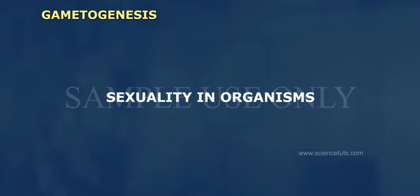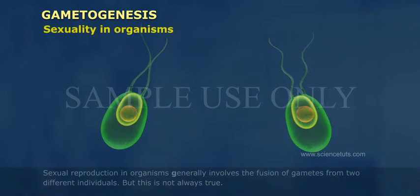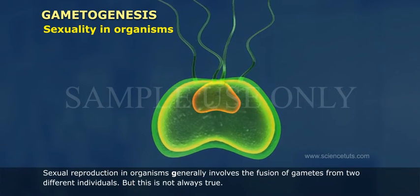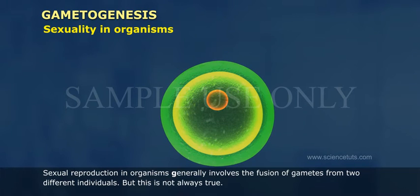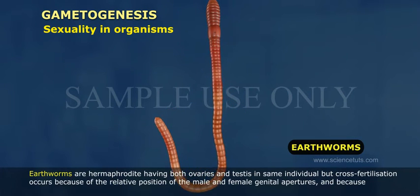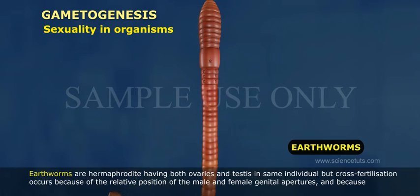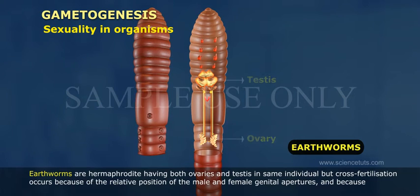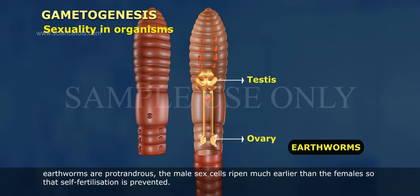Sexuality in organisms. Sexual reproduction in organisms generally involves the fusion of gametes from two different individuals. But this is not always true. Earthworms are hermaphrodites, having both ovaries and testes in the same individual. But cross-fertilization occurs because of the relative position of the male and female genital apertures, and because earthworms are protandrous, the male sex cells ripen much earlier than the female's, so that self-fertilization is prevented.